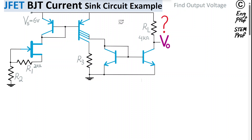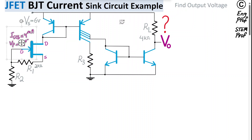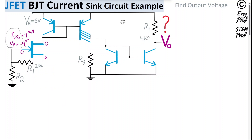For the junction field effect transistor, IDSS — the drain-source saturation current — is 4 milliamp, and the pinch-off voltage for the JFET is minus 4 volt. For the n-channel JFET with drain, gate, and source, in order to be in the active region of operation so that it operates properly as a current source, we need to understand the IDS characteristics.